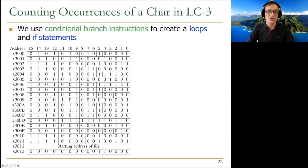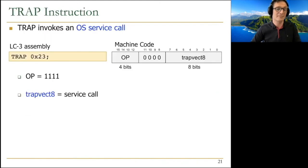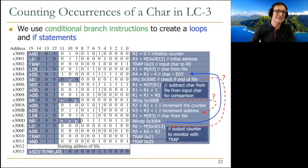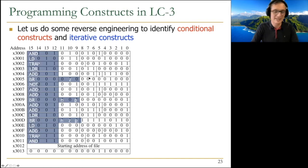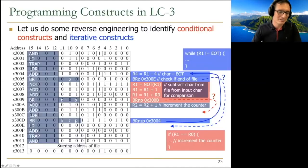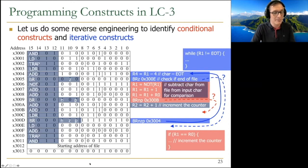The full program implementing these constructs is in your Patterson and Hennessy book. It uses conditional branch instructions to create loops and if statements. You can reverse-engineer it to identify conditional and iterative constructs. The file is stored in memory as a memory-mapped file. We don't have time to go into that in this course.